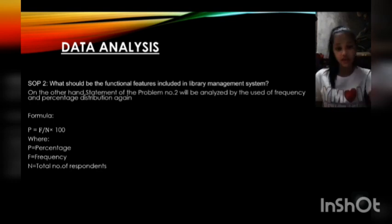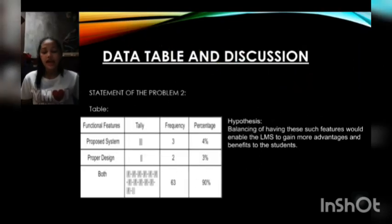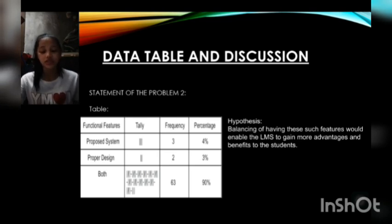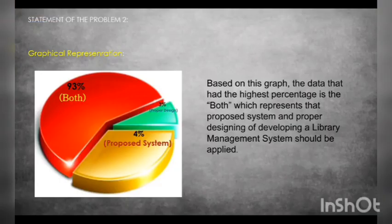For the gathered data, we used this proper design. N equals 70, F equals 2, so 2 divided by 70 times 100 equals 3% — that is the percentage for proposed system. For number 3, both: N equals 70, F equals 63, so 63 divided by 70 times 100 equals 90%. In statement of the problem number 2, we used a pie chart for graphical representation. Based on this graph, the data with the highest percentage is 'both,' consisting of 93%, representing that proposed system and proper designing of a library management system should be applied. Proposed system consists of 4%, and proper design consists of 3%.